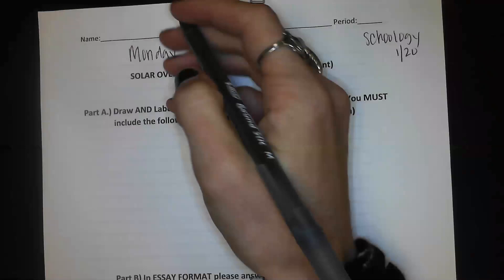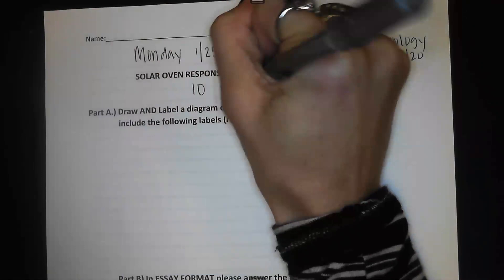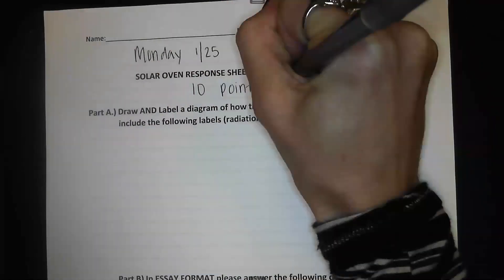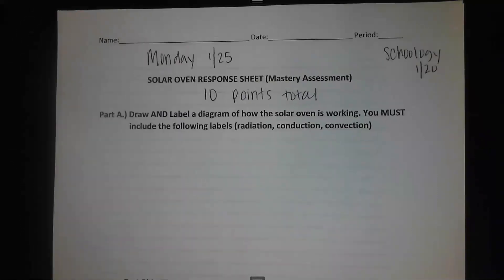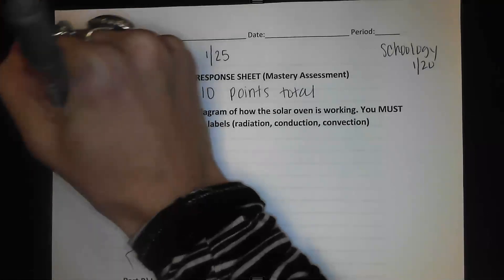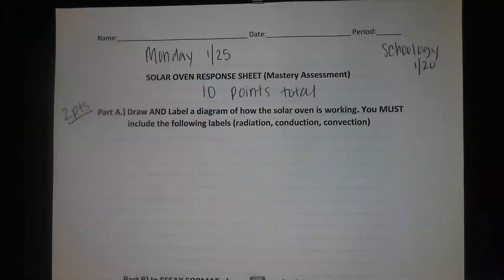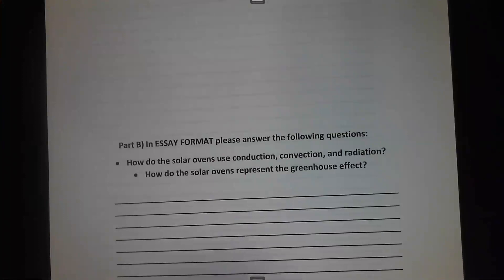This assignment is 10 points total and it's a mastery assignment. You get two points for Part A, which we're doing together, so everyone should get a minimum of 20 percent. Part B is eight points.